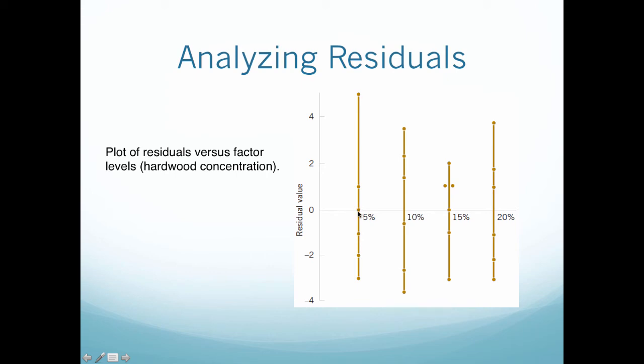This residual would be 0 at the 5% treatment. This one would be positive 1 at the 5% treatment. This one might be 5 at the 5% treatment level. So we're going to plot each of those residuals at the 5%, 10%, 15%, and 20% treatment levels.